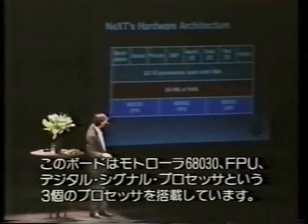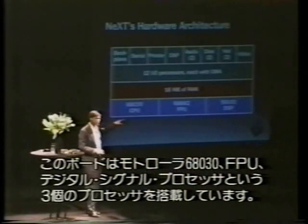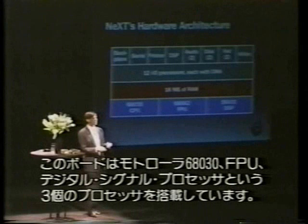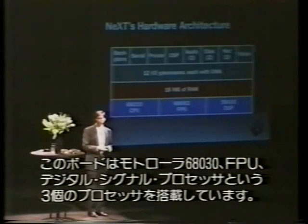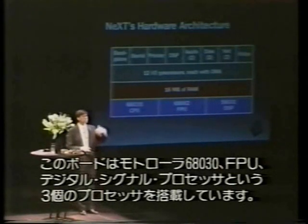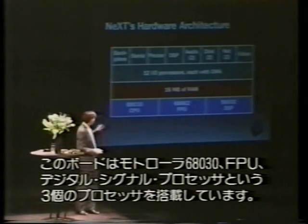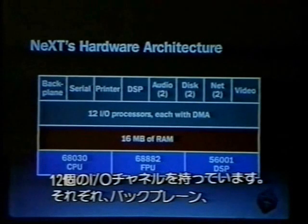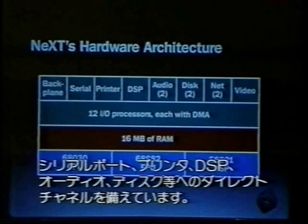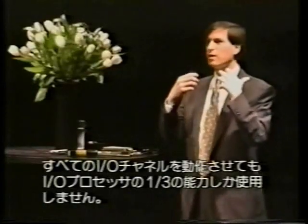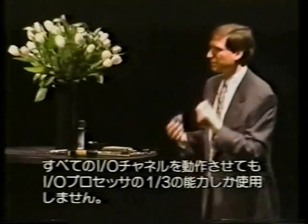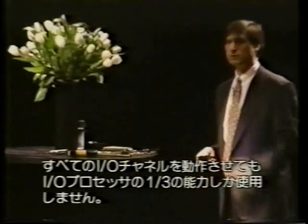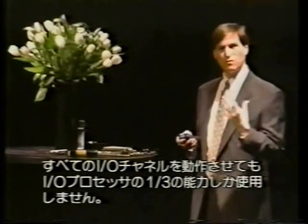So this is our architecture. We actually use three processors: a Motorola 68030, floating point unit, and a new type of processor to computers, a digital signal processor. And we'll talk a little more about that later. We have 12 I/O processors, each with their own direct channel to memory. And you can see what they're for — the backplane, the serial ports, the printer, the DSP, the audio, the disks, etc. We can be running all of these at one time and still only be chewing up about a third of the overall system performance.